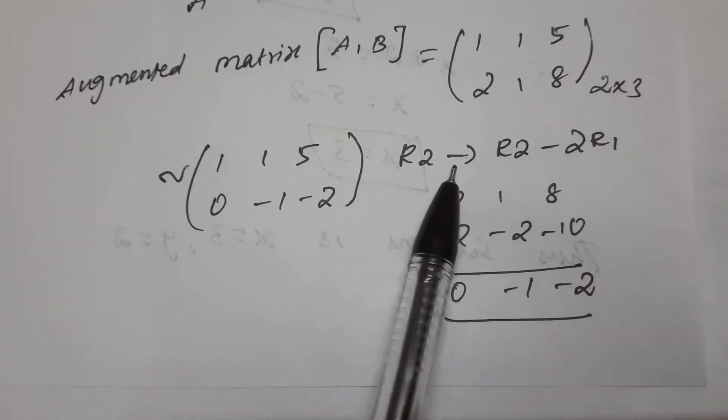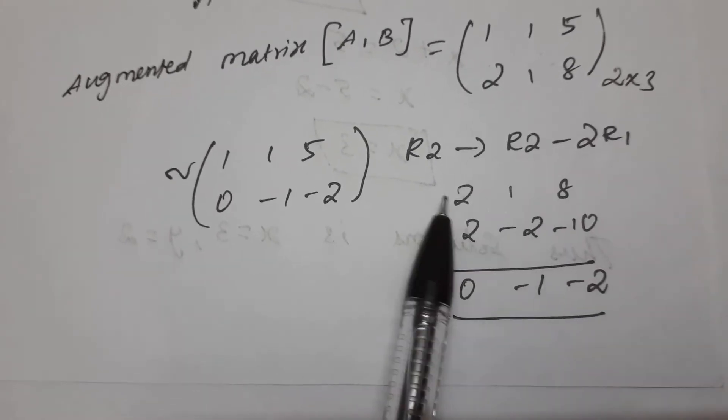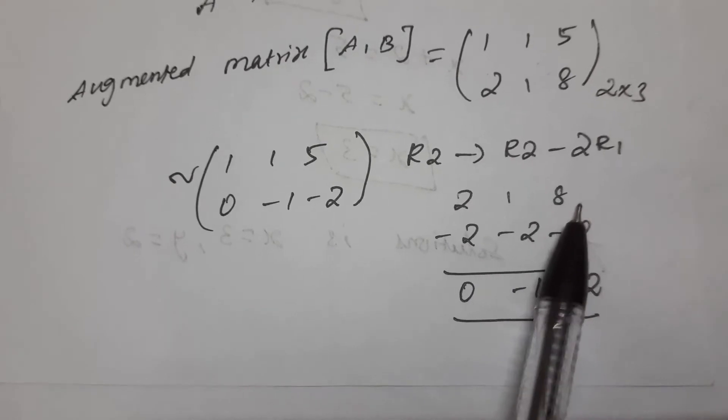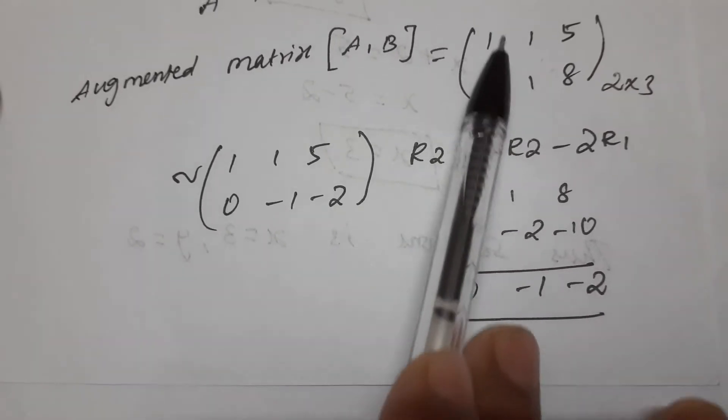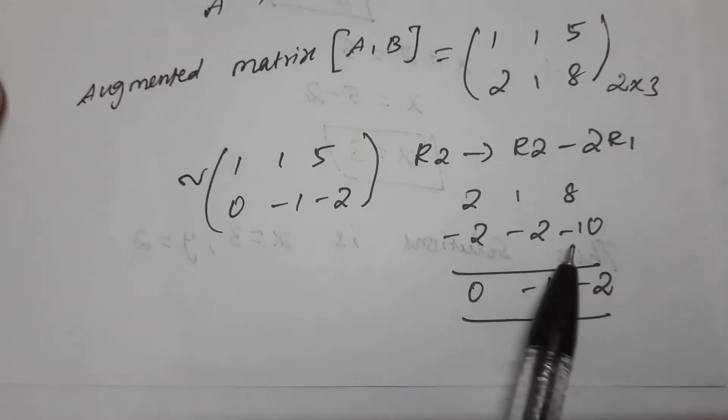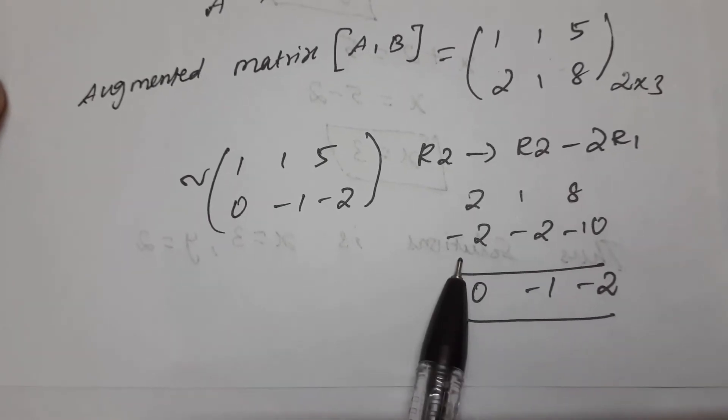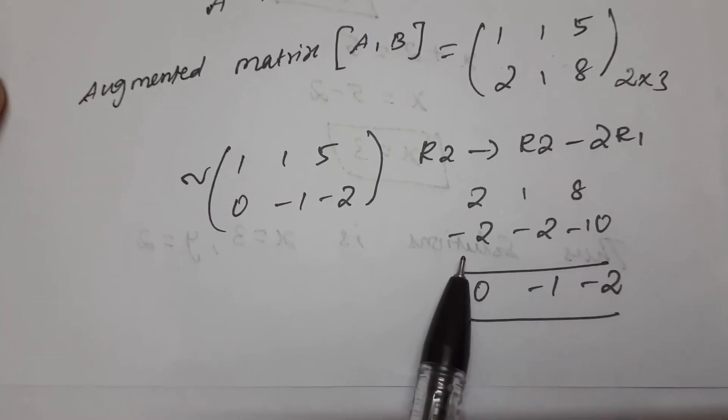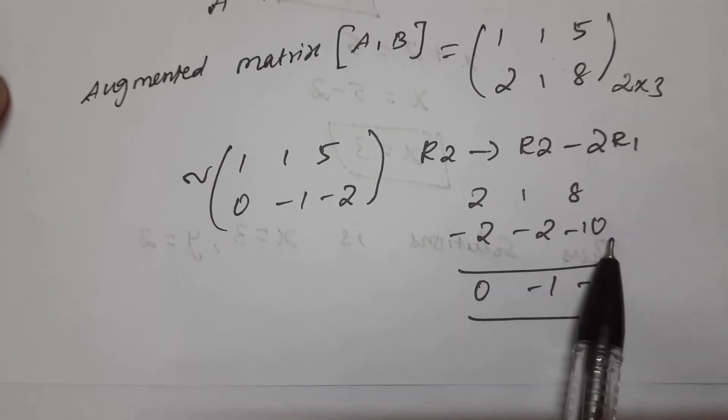R2 is 2 1 8. Minus 2R1: 2 times (1 1 5) gives 2 2 10. So we get -2 -2 -10. Now we'll multiply and subtract. Bring the minus out to the front.